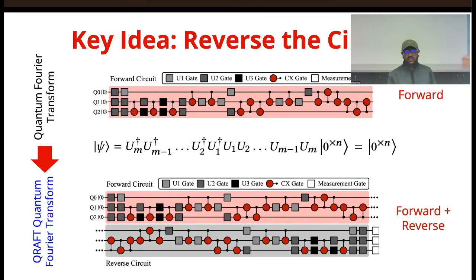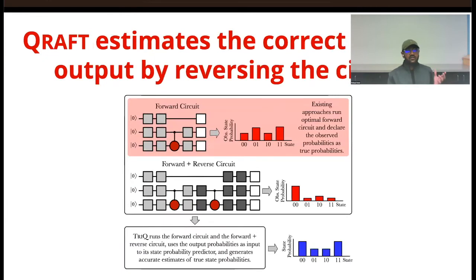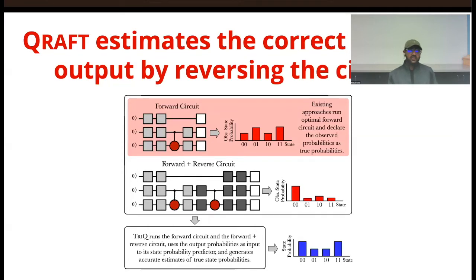How can we use this operation? The reverse operations are essentially the same as the forward circuit but in reverse order, so there should be some correlation between the errors observed by the forward plus reverse circuit and those observed by the forward circuit. We don't know the ideal output of the forward circuit, but we do know the ideal output of the forward plus reverse circuit — which is the ground state zero. Once we run the full forward plus reverse circuit, we end up at some non-zero state, measure the error there, and apply a correlative mechanism to figure out and correct the error in the forward circuit.